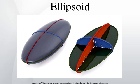An ellipsoid is a closed quadric surface that is a three-dimensional analog of an ellipse. The standard equation of an ellipsoid centered at the origin of a Cartesian coordinate system and aligned with the axes is given. The points lie on the surface and the line segments from the origin to these points are called the semi-principal axes.